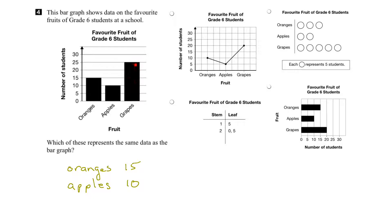The third bar represents the number of students who liked grapes the best, and that would be twenty-five students liked grapes.